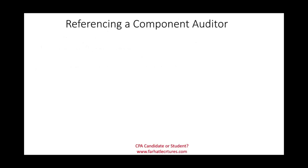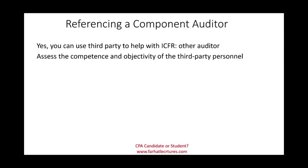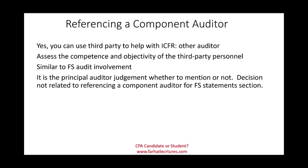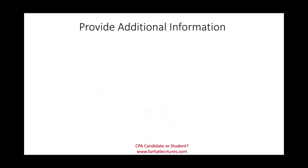A third situation is when you reference a component auditor. Just like in a financial statement audit, you could use a third party — another auditor — to help with the internal control over financial reporting audit. You have to assess the competency and objectivity of that third-party personnel and firm. It is very similar to the financial statement audit involvement. However, whether to mention or not mention the component auditor is the principal auditor's judgment, and that decision is not tied to whether you referenced the component auditor for the financial statements. They are separate judgment calls.